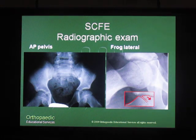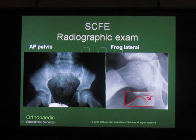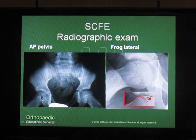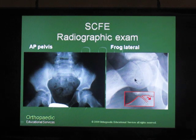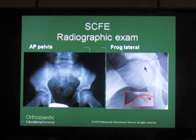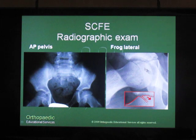As you can see on this x-ray, the AP pelvis looks essentially normal. You can see the well-positioned femoral head in relationship to the neck, but it's on the lateral or frog lateral view that you notice the abnormalities. As you can see here, the femoral head is in good position but there's a slippage or mismatch between the femoral head and the neck and shaft.